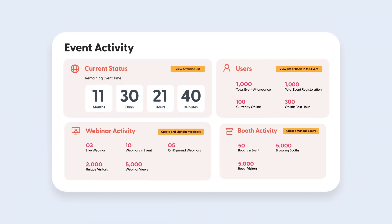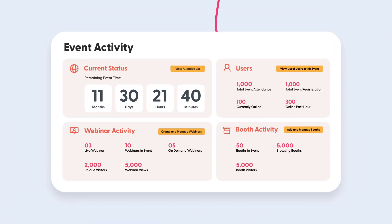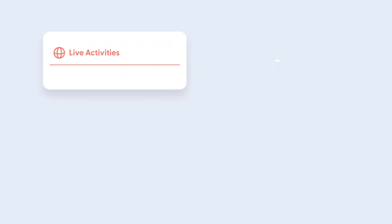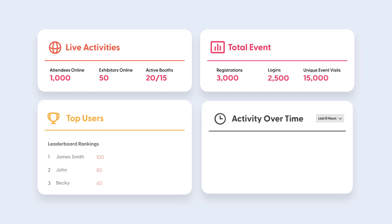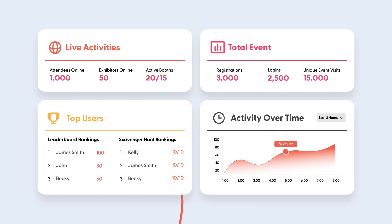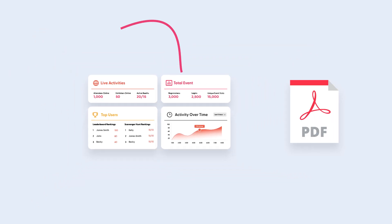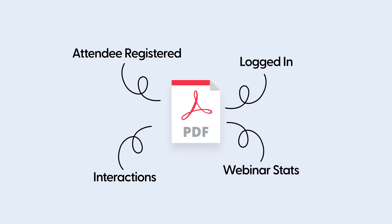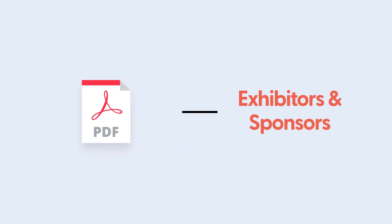Next, a bit about reporting. The great thing about virtual events is the fact that everything is tracked and measurable. You can quickly find out who logged in, how many people visited each booth, which webinars were the most popular, and so on. We provide a backend reporting area which you can access and get stats in real time. What's more, we even deliver a shareable PDF report after the event is over that summarizes your event's main metrics. You can then share these stats with your exhibitors and sponsors so that they can understand the kind of engagement they got.